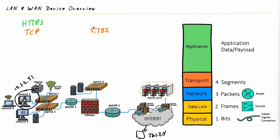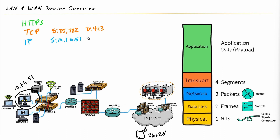For the TCP header information, I'll put the source first followed by the destination. So the source port is 35,782 and the destination port is 443, the well-known port for HTTPS. Then before that traffic is sent out on the wire, computer one also needs to include the source and destination IP addresses at layer three — the network layer. The source address is 10.1.0.51 and the destination is the server at 23.1.2.4.